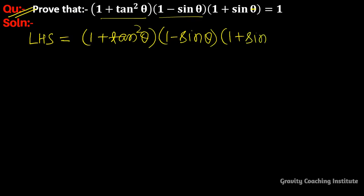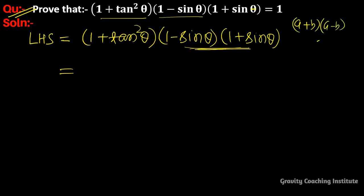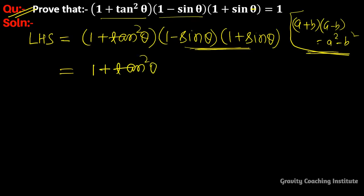So here we will use the identity (a + b)(a - b) = a² - b². We will use this algebraic identity, then this will be simplified.